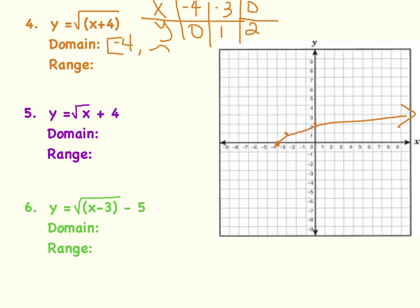Did this leftward shift change our range? The answer is no. The range is still from 0 to positive infinity. Notice that the beginning points of your domain and range will always be the starting point of your square root function.